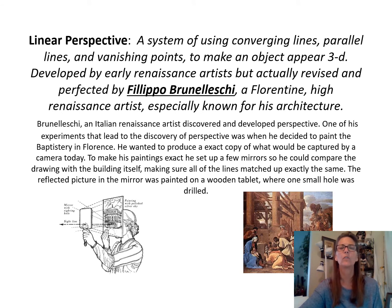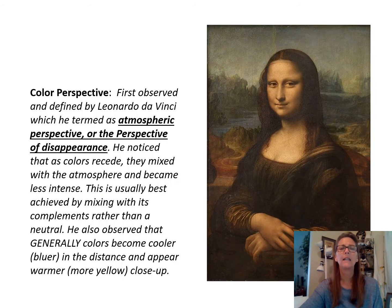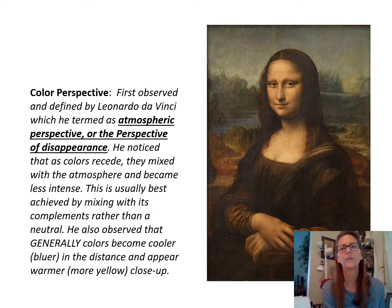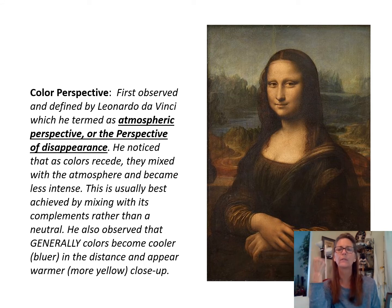Then you have color perspective. As objects receive their local colors — meaning their real colors — those colors lose intensity as they recede. It was first observed by Leonardo da Vinci, who called it atmospheric perspective, or the perspective of disappearance. He noticed that colors mixed with the atmosphere and became less intense. Usually your cooler colors are in the background and your warmer colors are in the foreground.